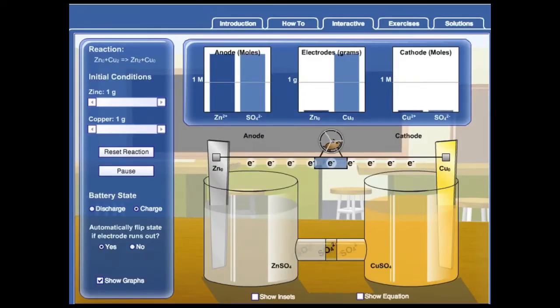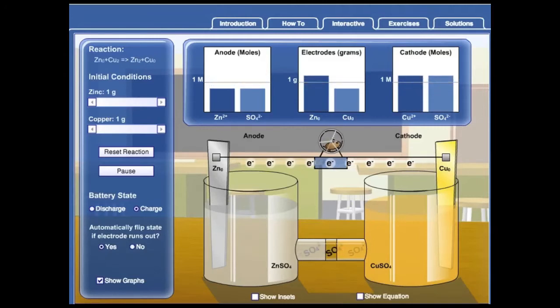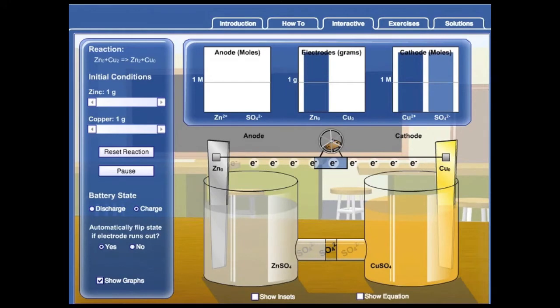I can return this cell to its original useful state if I can get the electrons to flow in the reverse direction. And as I do this you can see that zinc is being redeposited on the anode and copper is being depleted from the cathode. So sulfate ions are traveling in the opposite direction in the aqueous solution, but here I am recharging the battery by driving the electrons in the other direction. Cells that can be recharged like this are called secondary cells.